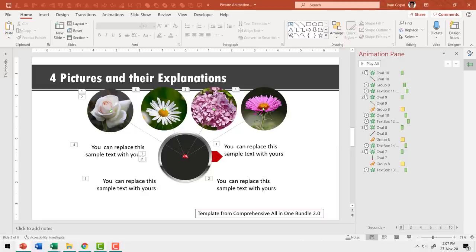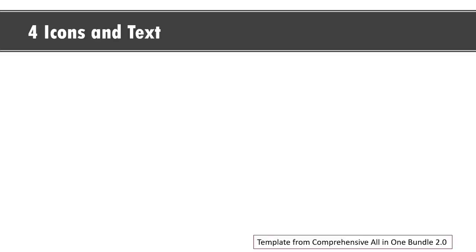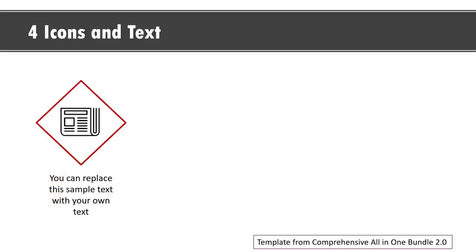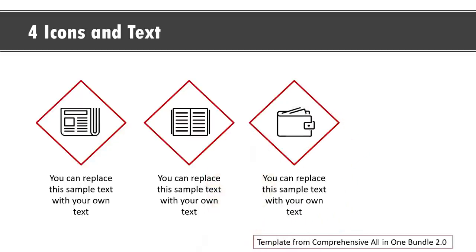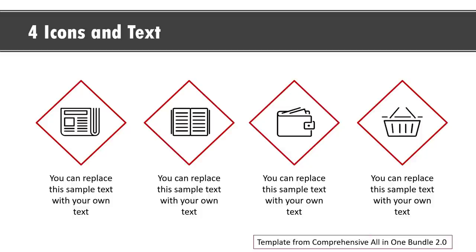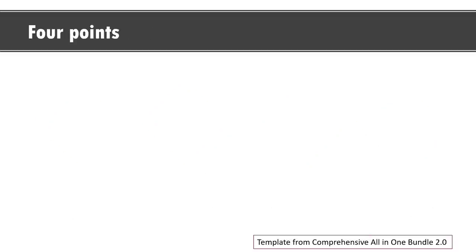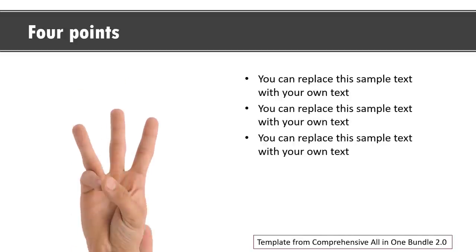That is the power of using templates — all the work is saved for you. The next template shows four icons with corresponding text. On a click, a hand draws the shape, then the icon appears in the center with its explanation. Then on a click the second, third, and fourth points are shown. You can also present a simple list of four points without pictures.